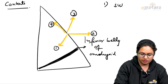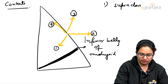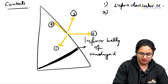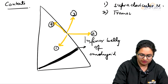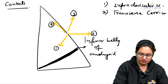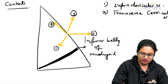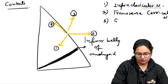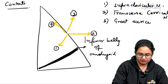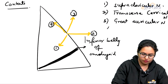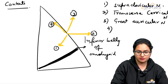The first is the supraclavicular nerve. The initial parts of these nerves are forming the contents of this triangle. The second is the transverse cervical nerve, the third is the great auricular nerve, and the fourth is the lesser occipital nerve.